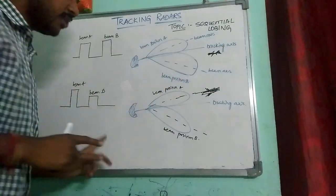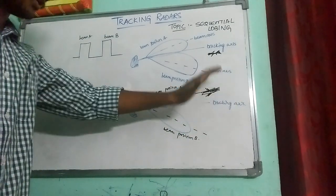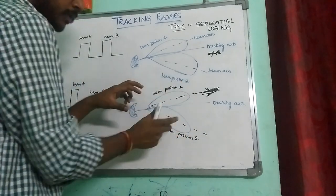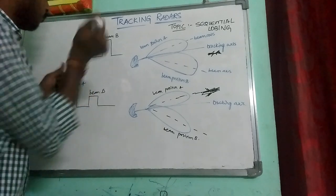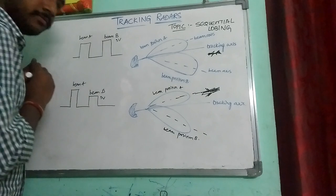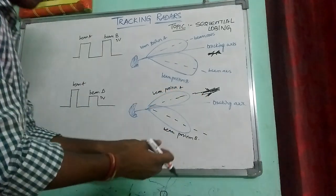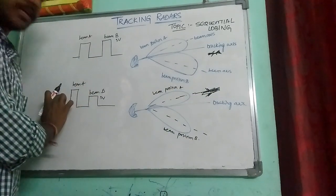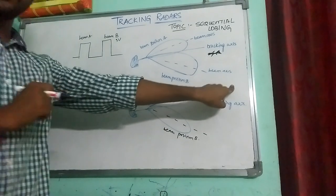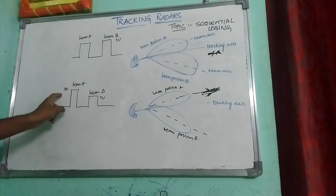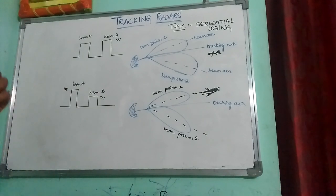If the target is not on the tracking axis — let's say it is on the A side — then when I project the two beams, at the B side I don't find any target, so there is a voltage difference. The base voltage might be 5 volts at both positions, but due to the echo signal received from the target at position A, our signal has increased to, say, 10 volts.